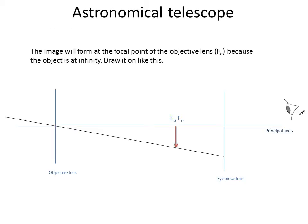To find out, you have to mark on the image. Now, the image will form at the focal point of the objective lens because the object is at infinity, and objects that are infinitely far away are drawn to focus. The image forms at the focal length. So you draw the image on like this, one part on the axis, the other part touching the ray.